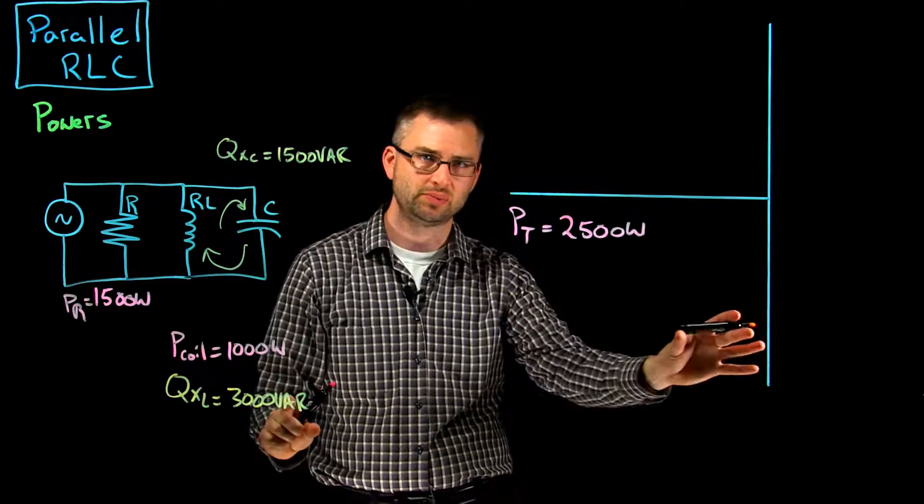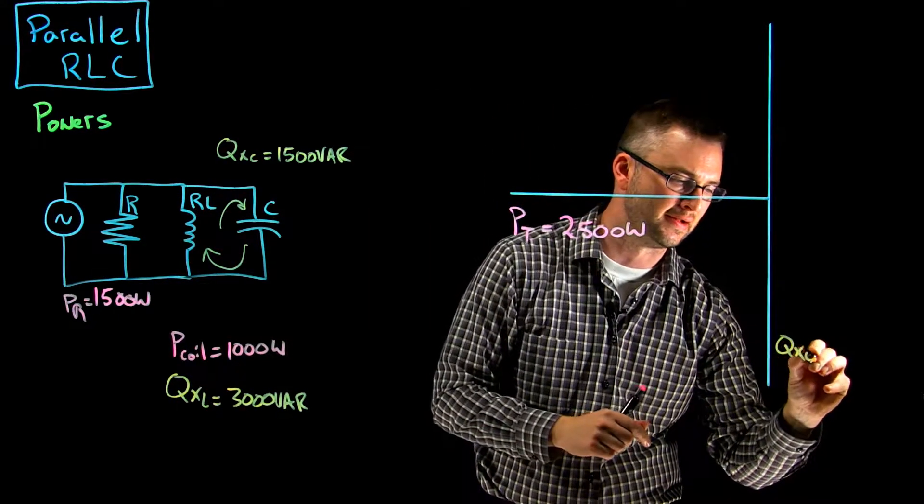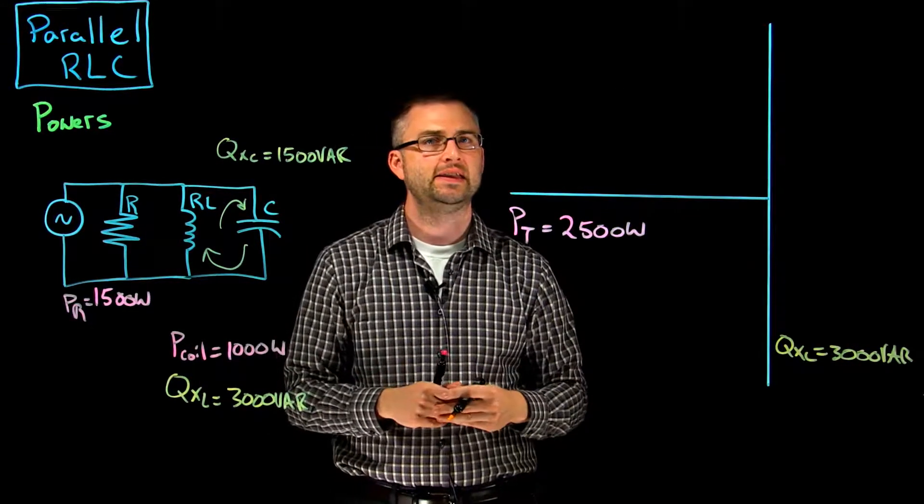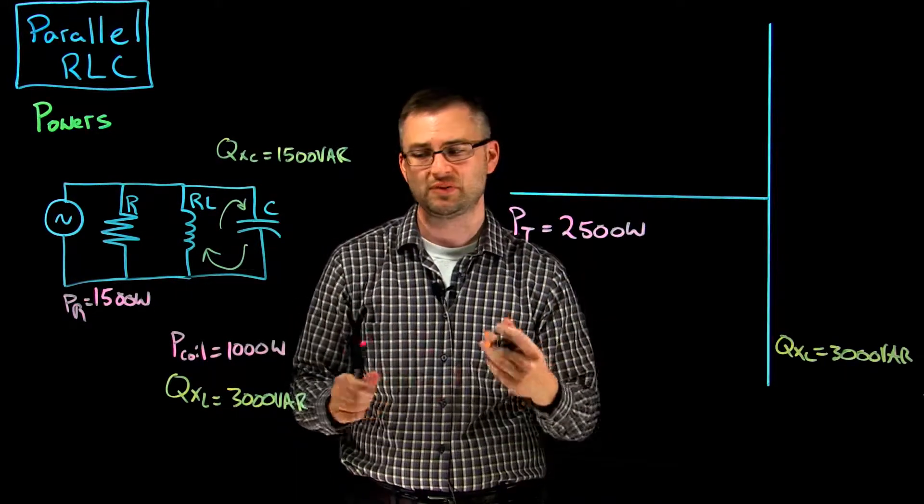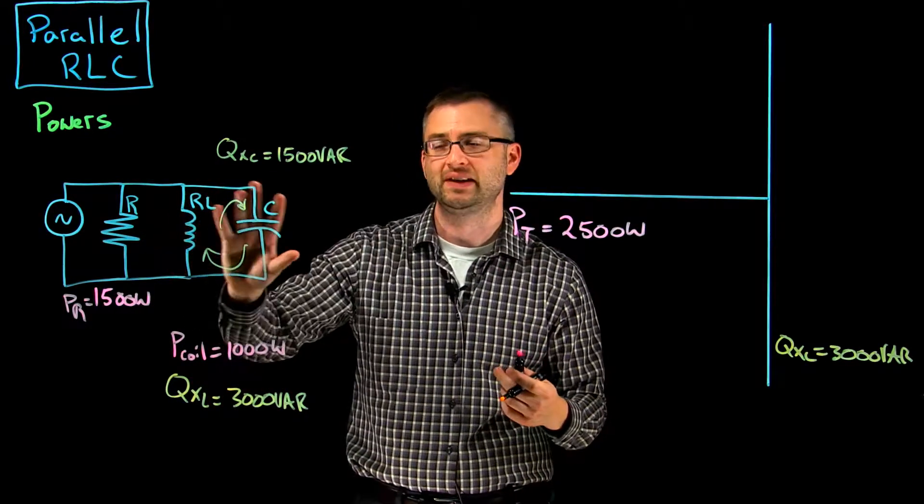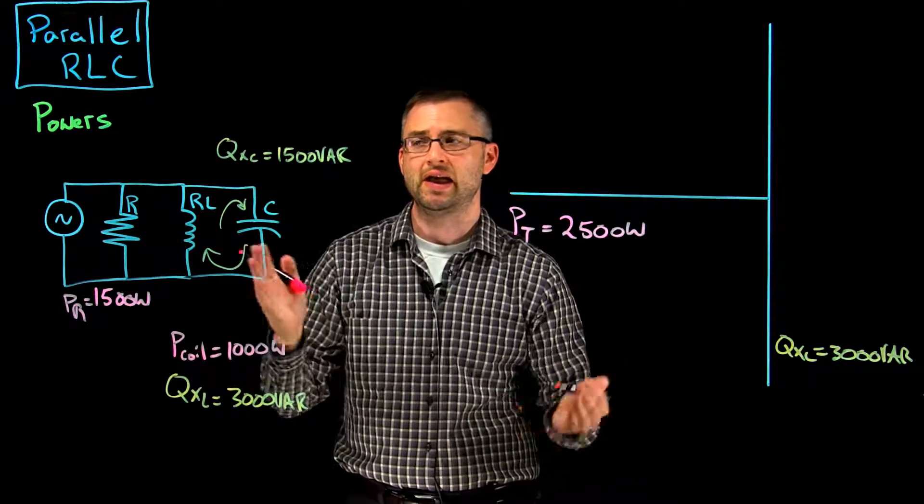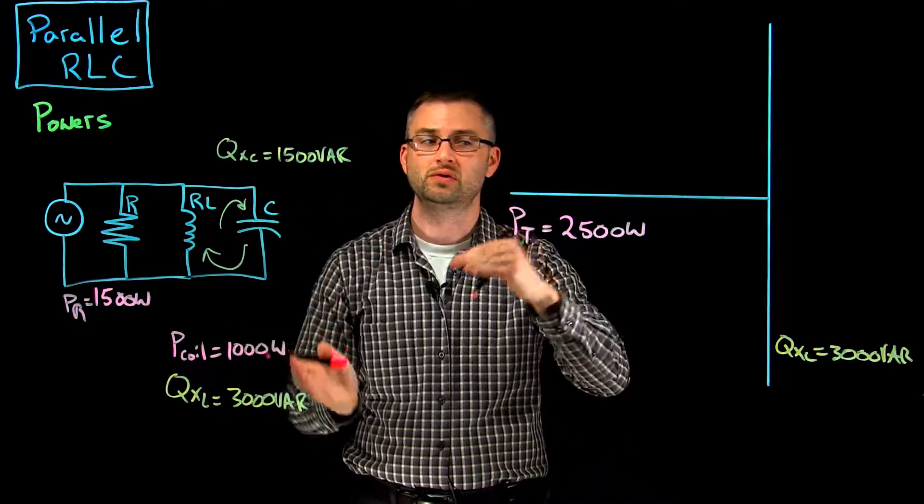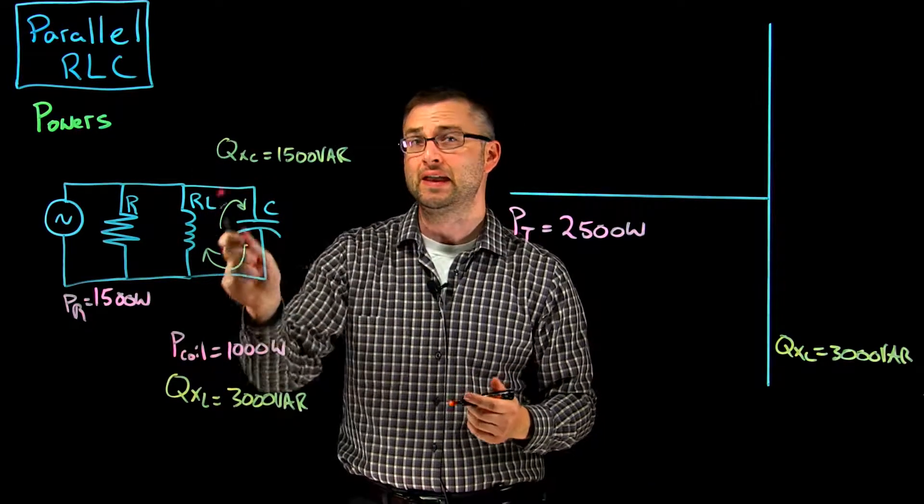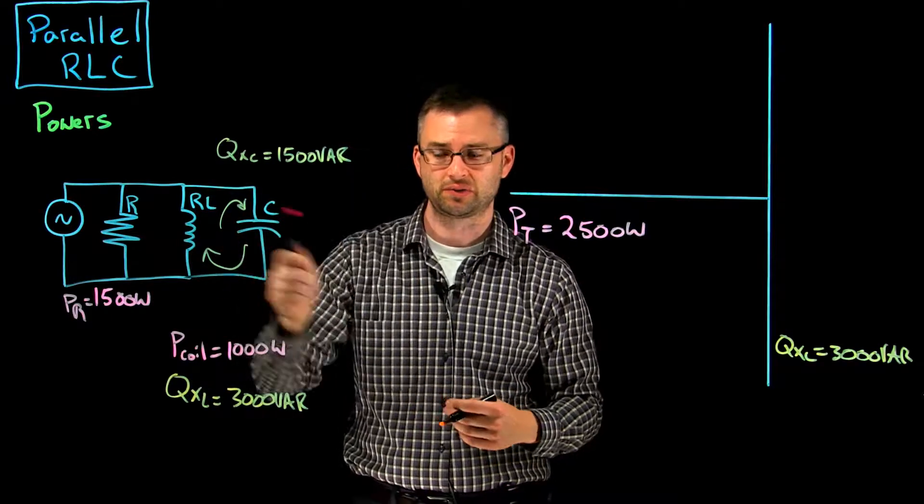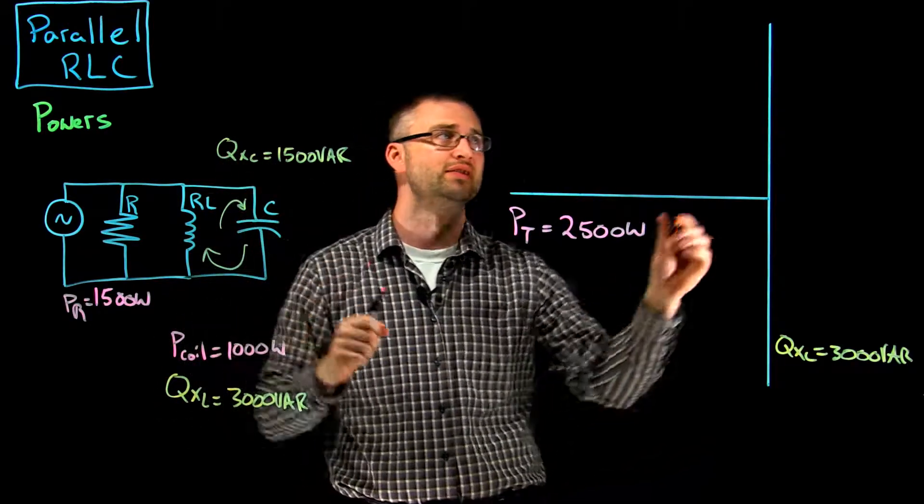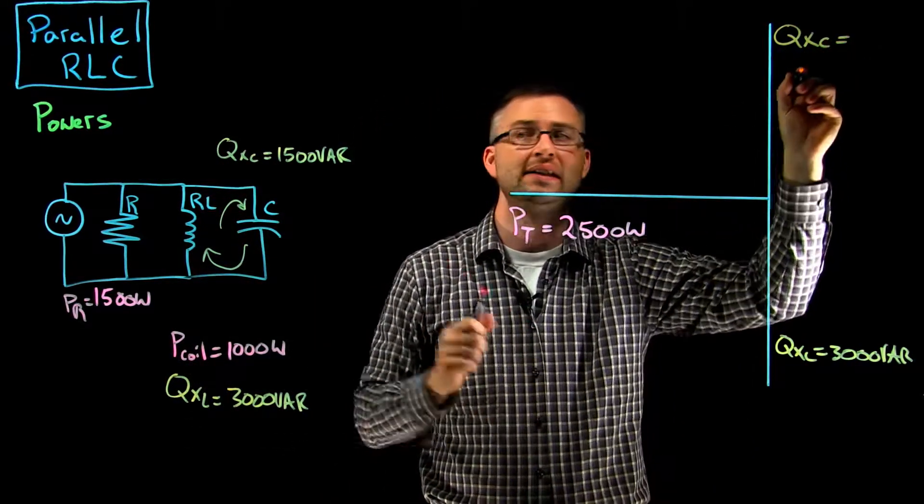Well, the inductive VArs we're going to place down here. So my QXL is equal to 3000 VArs. Now when we look at the quadrature power sine waves, what we see is that when the QXL is storing energy or power in the magnetic field, the cap is actually releasing energy from the electric field. And so those two will go back and forth and oscillate, and they'll be sort of a little circuit inside our big total circuit. The QXL will be down here, our lagging VArs are down below, and our leading VArs we're going to place up here. So our QXC is 1500 VArs.